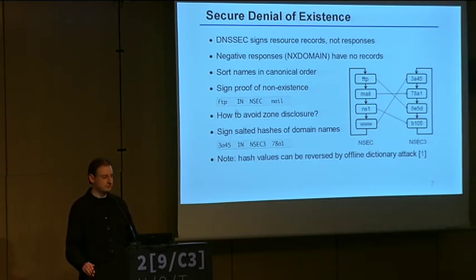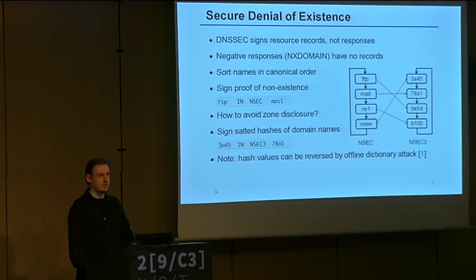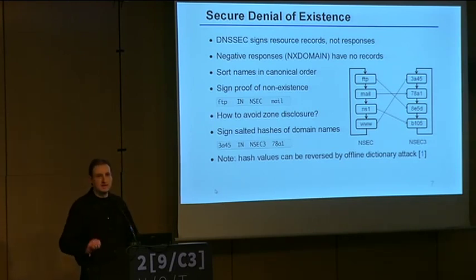To avoid zone disclosure there is another mechanism: NSEC3. Instead of disclosing domain names, it discloses hashes of the domain names. You hash all domain names in your zone, sort by the hashes, and give an answer like: there is a domain with this hash and this hash, but in between there are no domain names. The querier can hash the queried name and verify it falls in between but doesn't exist. The problem with NSEC3 is you can retrieve all hash values of a zone and start a dictionary attack offline, so you can still get a copy of the zone, but it's much harder.